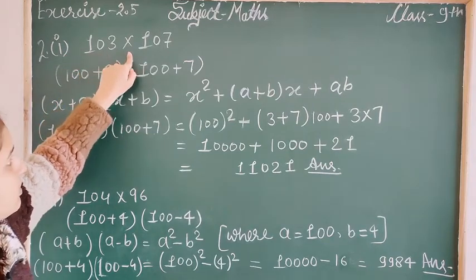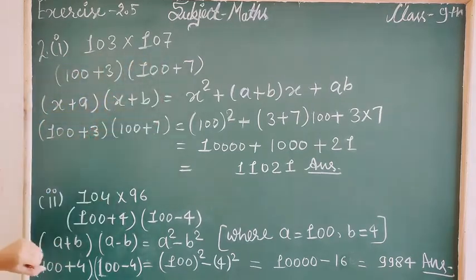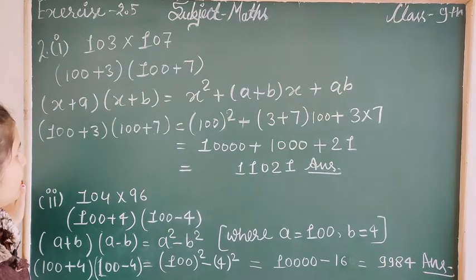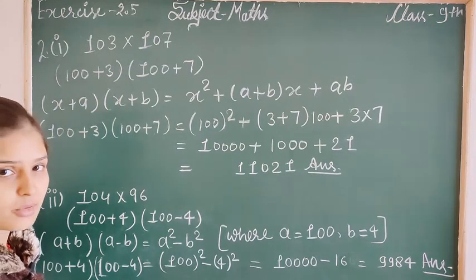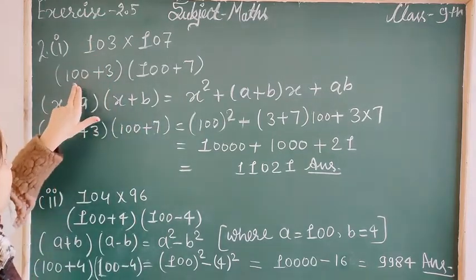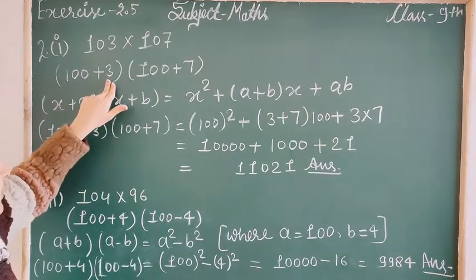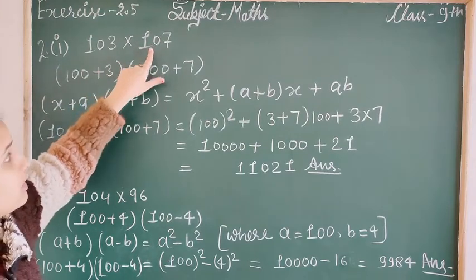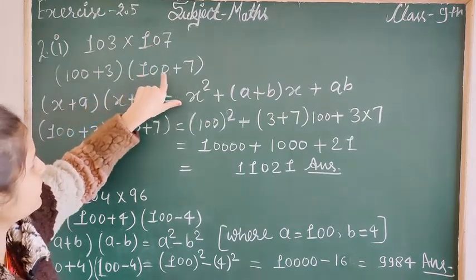103 multiplied by 107. You cannot multiply directly, so how do we find the product? We can write 103 as 100 plus 3 and 107 as 100 plus 7. We apply this in the formula.